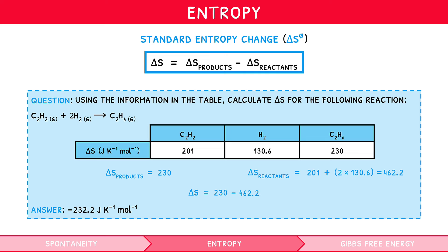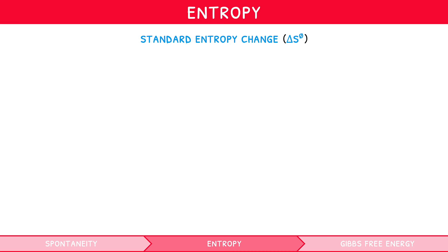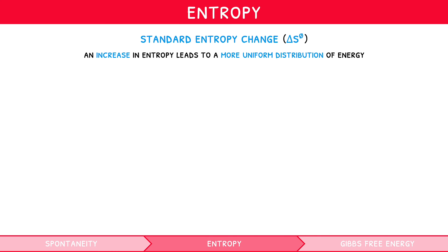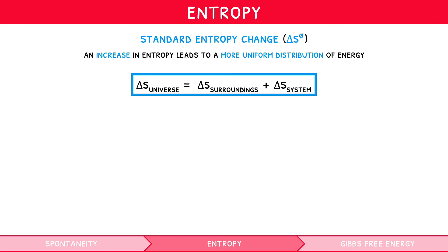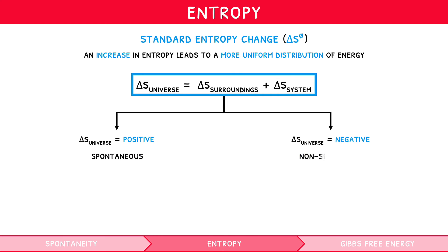You can now determine entropy, but why is this useful? A reaction with an increase in entropy will lead to a more uniform distribution of energy within the reaction. The entropy of a system is related to its surroundings by the equation: delta S of universe equals delta S of surroundings plus delta S of system. Using this formula, if the change in entropy for the universe is positive, the reaction is spontaneous. But if negative, the reaction is non-spontaneous.